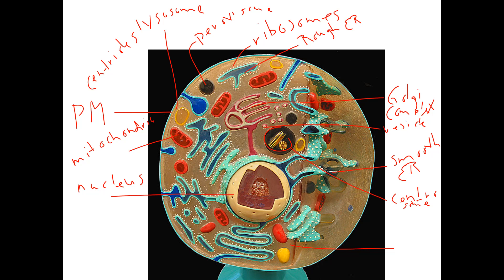Make sure that if I were to show you this picture you would be able to tell me it's a eukaryotic cell because it has membrane-bound organelles, and it's an animal cell because there's no cell wall, it has lysosomes, and it has centrioles.